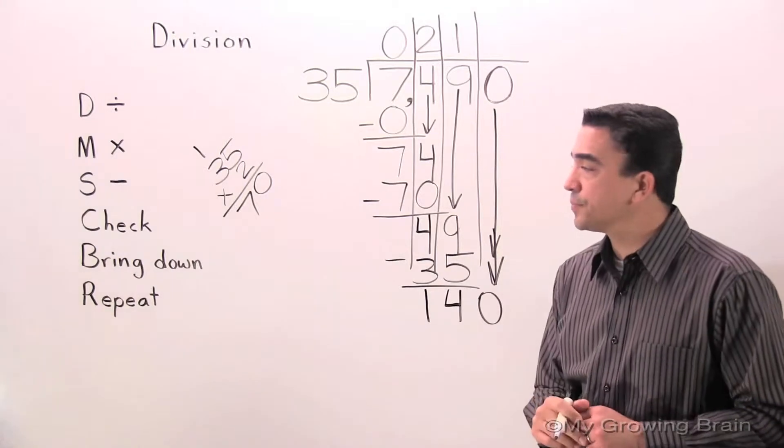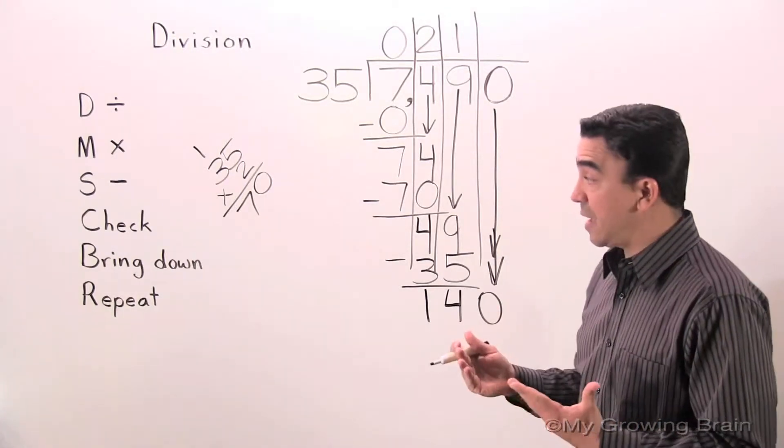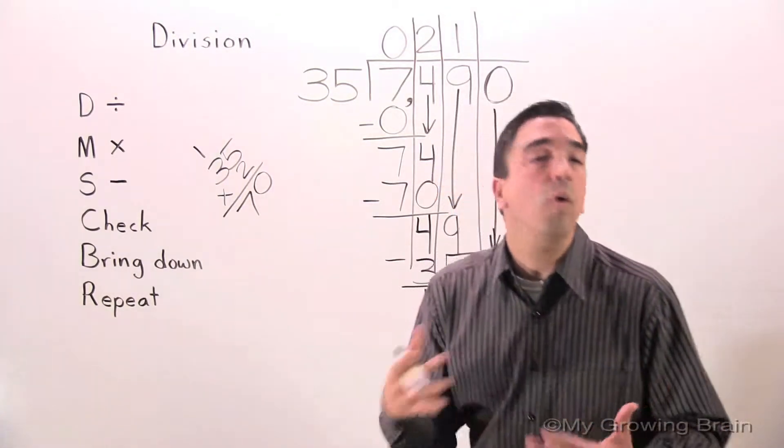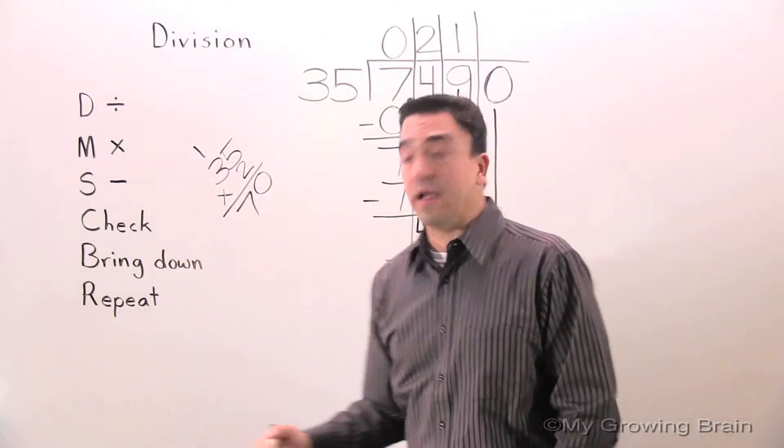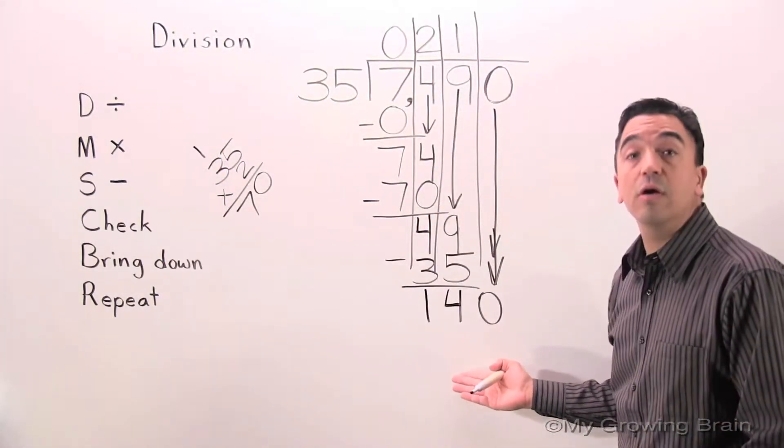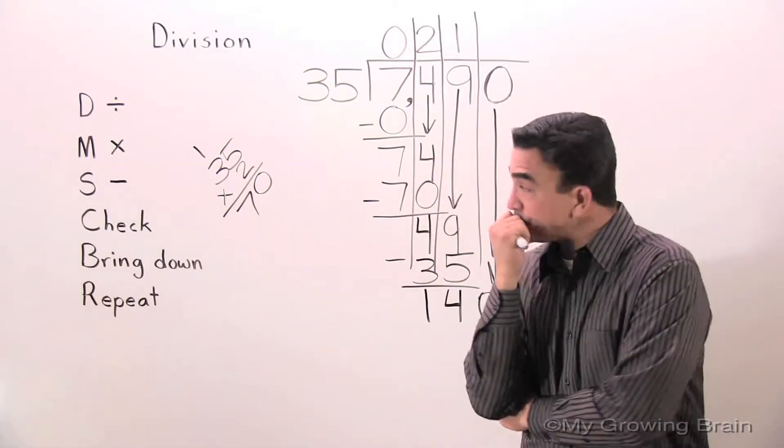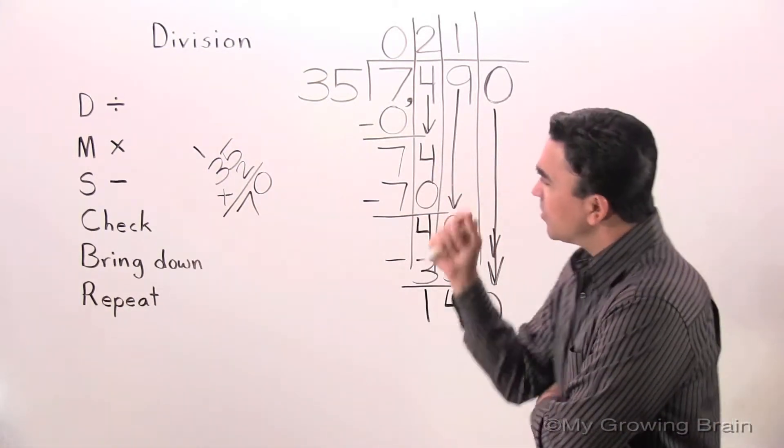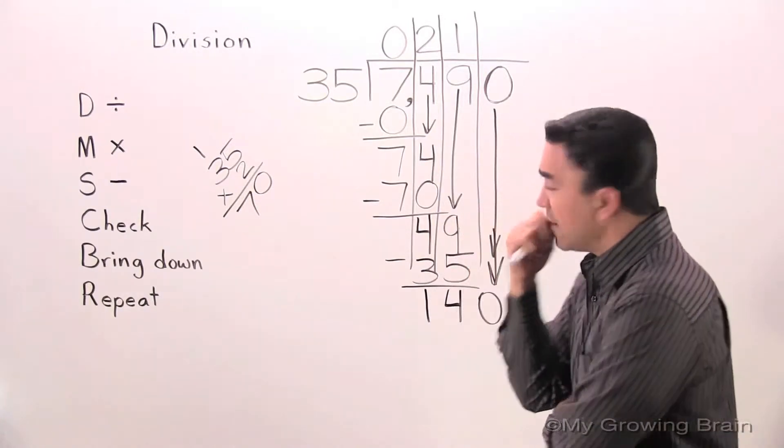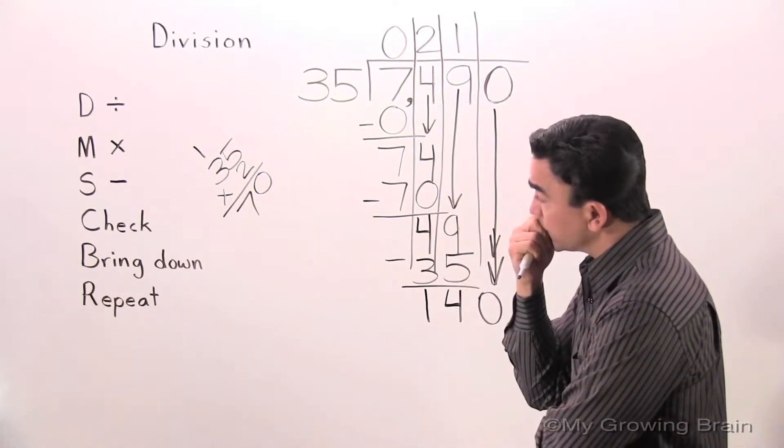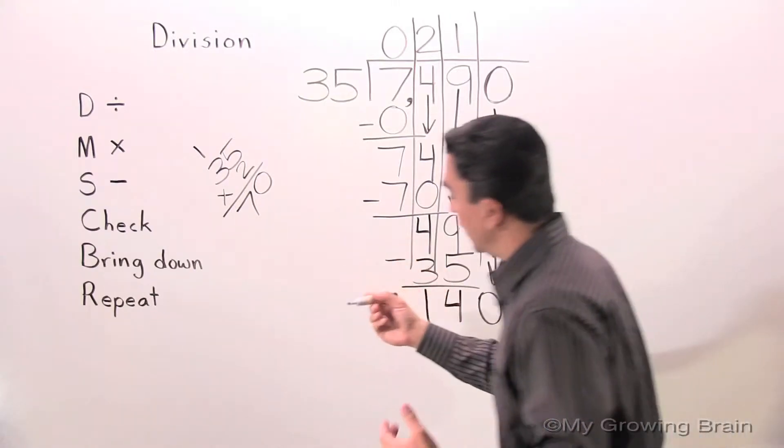Next step. Repeat. Repeat the whole process. Go back to divide. 140 divided by 35, or 35 into 140. 35 times 2 is 70. I'm experimenting again. Now I'm going to try 35 times 4. I'm going to double it. Let's see.